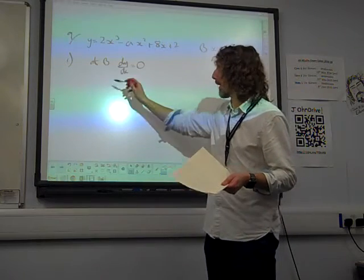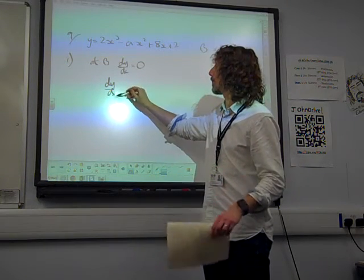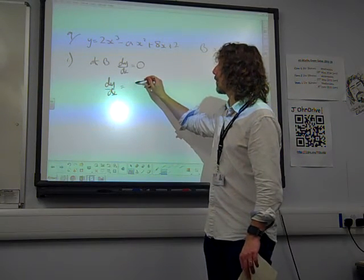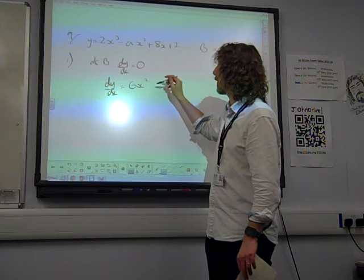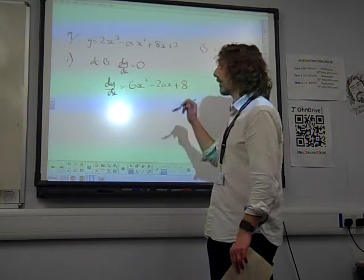So we're going to have to find dy by dx, which would be 6x squared minus 2ax plus 8.